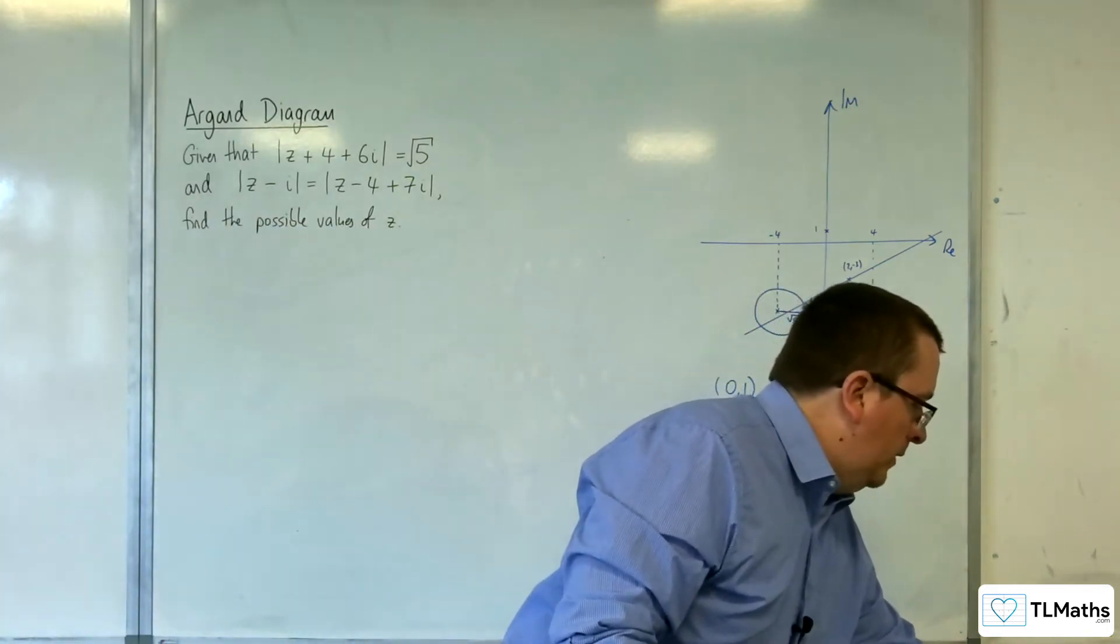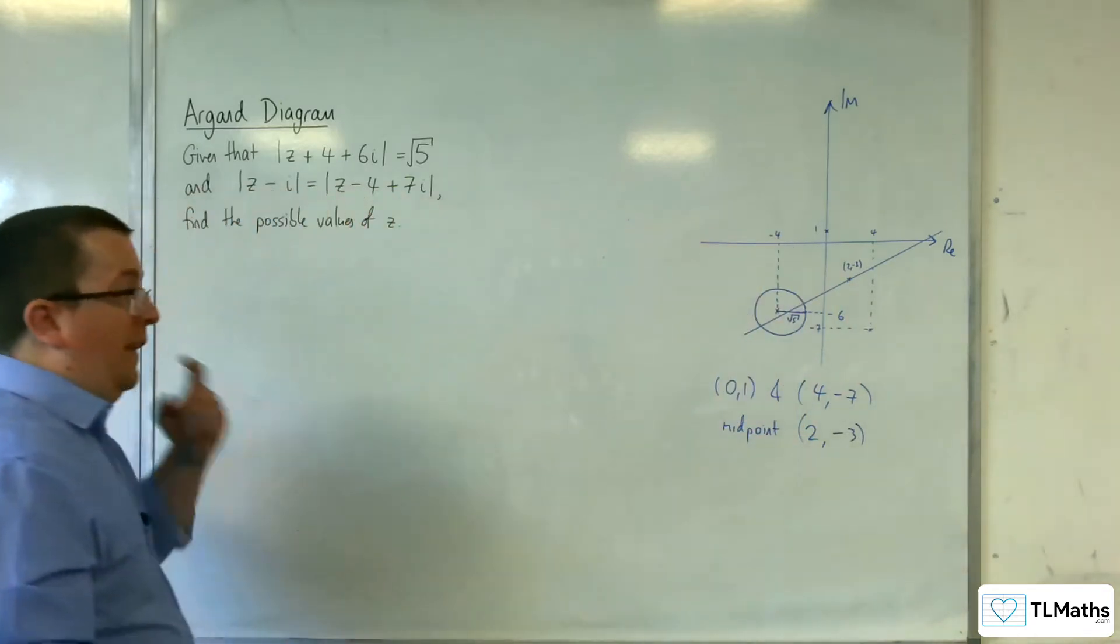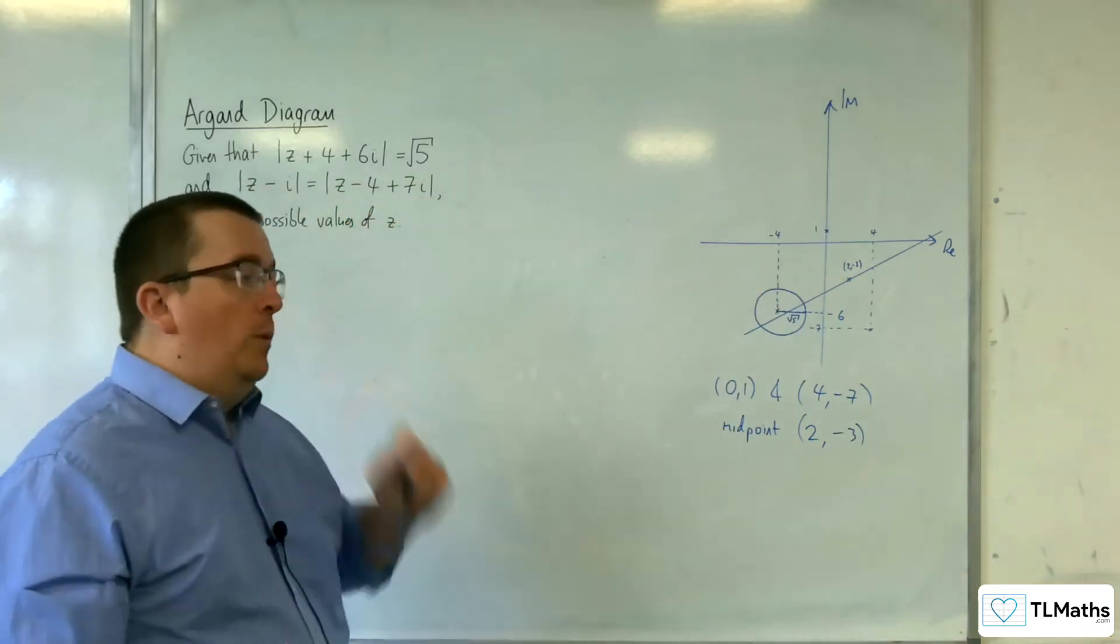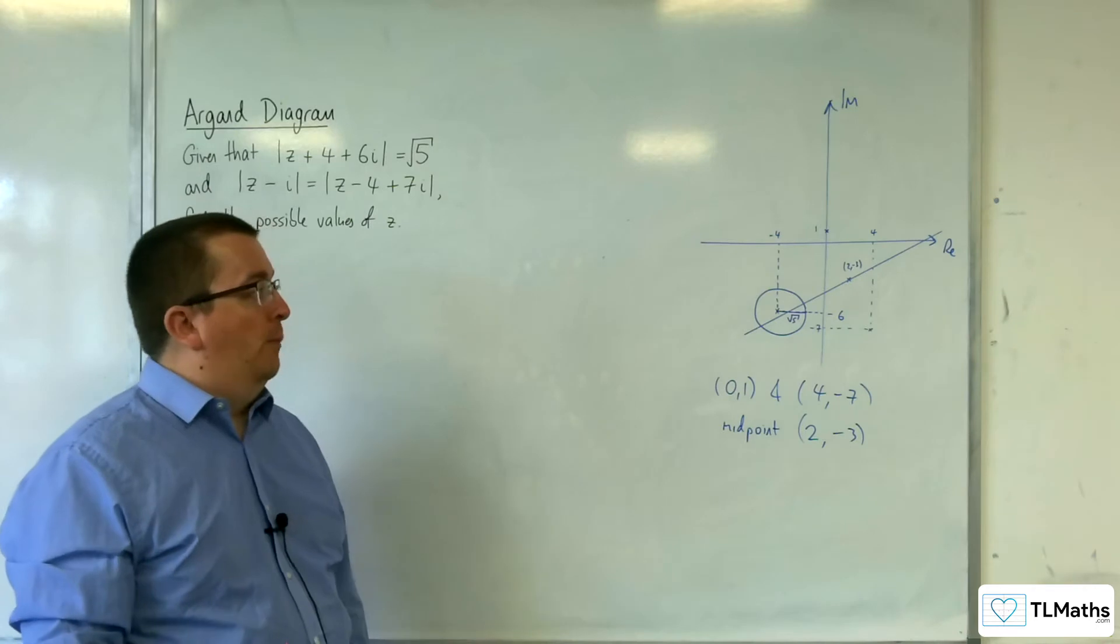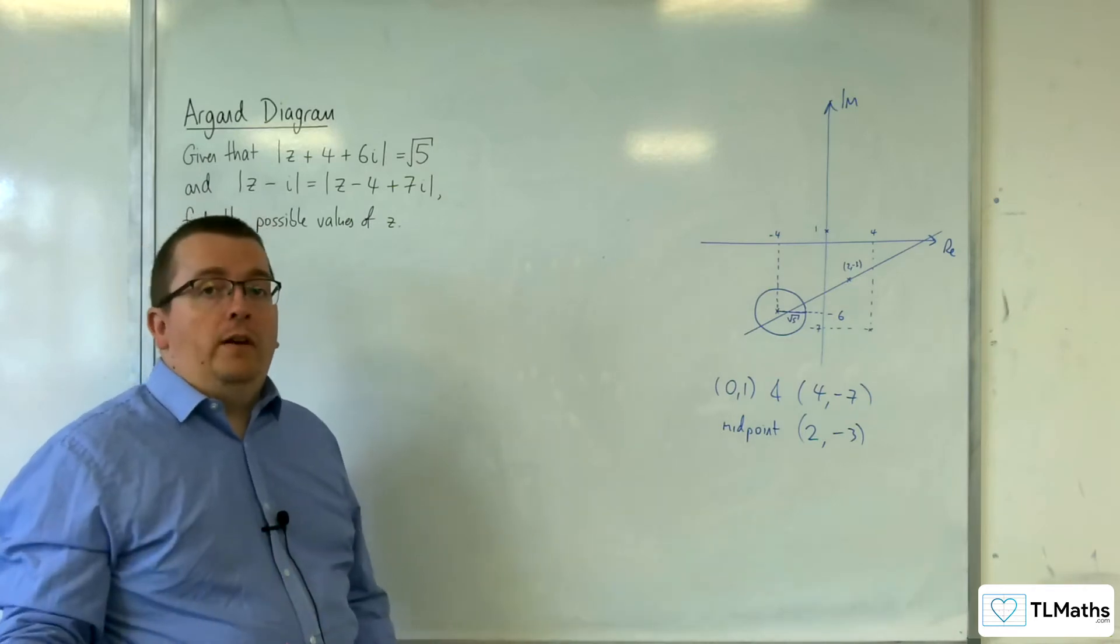So we need to work out the equation of the line then. And work out the equation of the circle both in Cartesian form. Then I can sub one into the other and solve the equation.